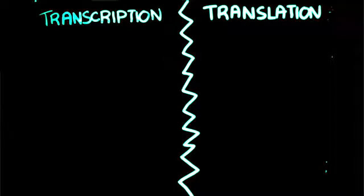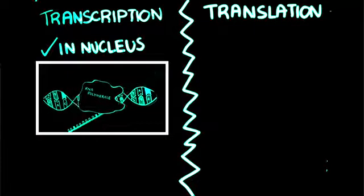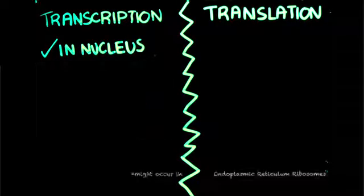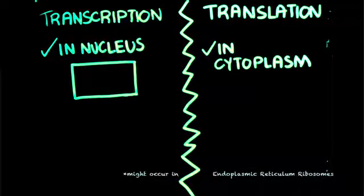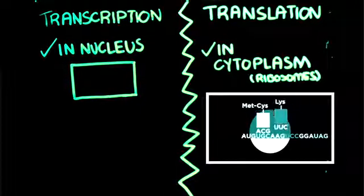In eukaryotic cells, transcription occurs in the nucleus, during which the DNA is used as a guide or a template to create mRNA or messenger RNA. Translation occurs in the ribosomes in the cytoplasm, during which the mRNA is used to create a polypeptide.